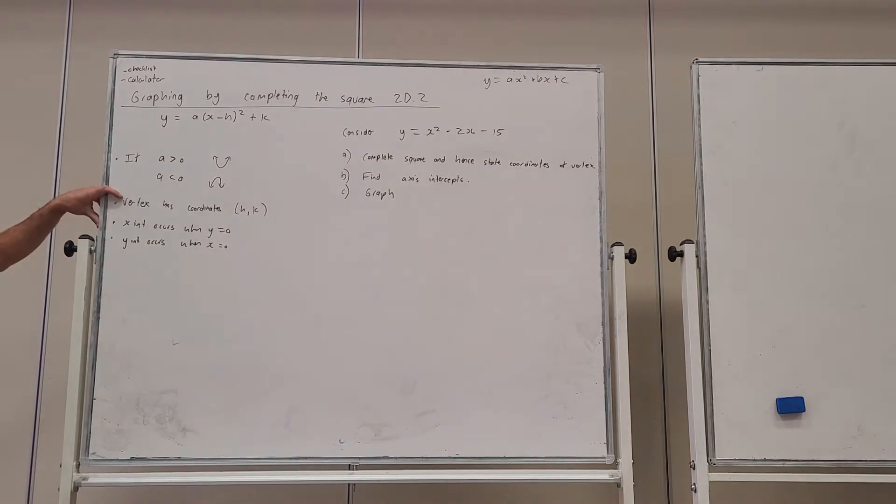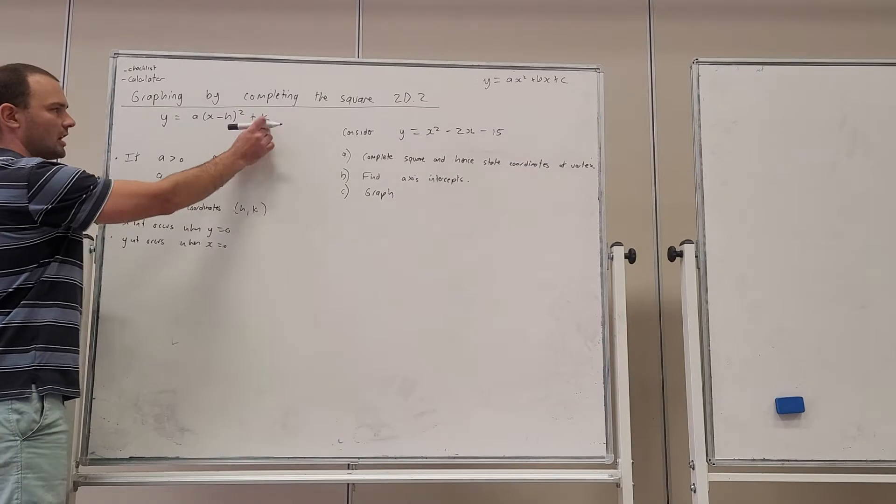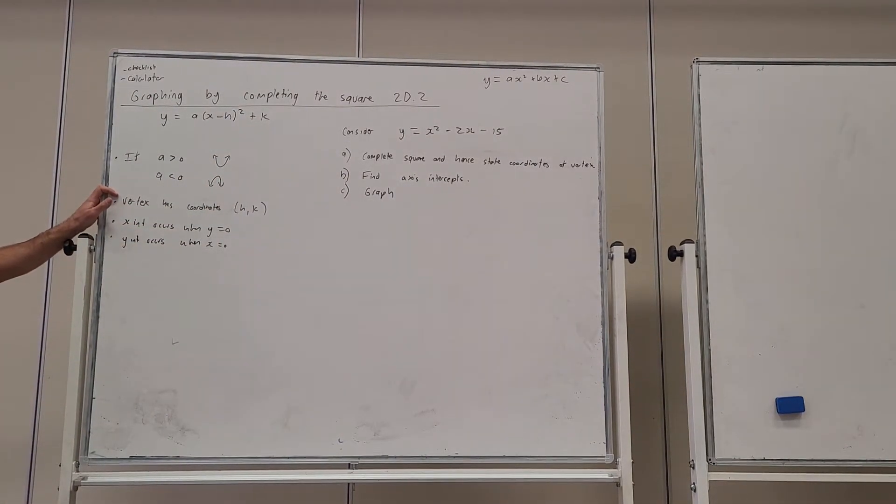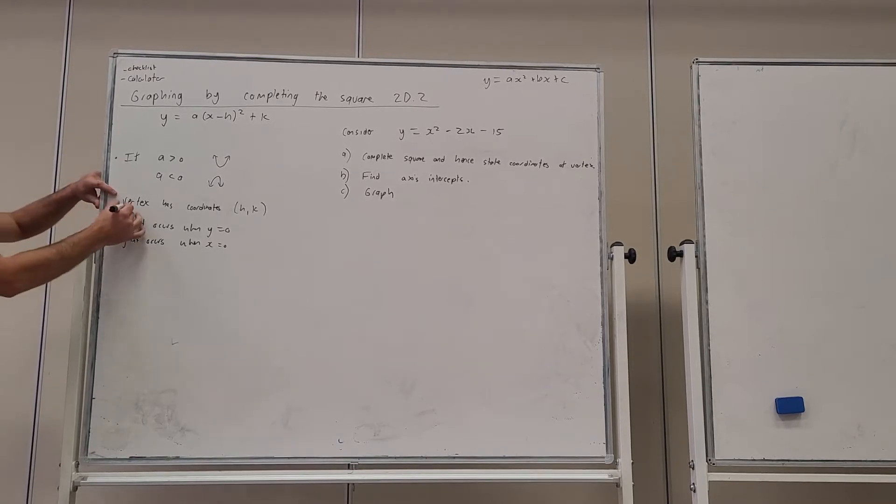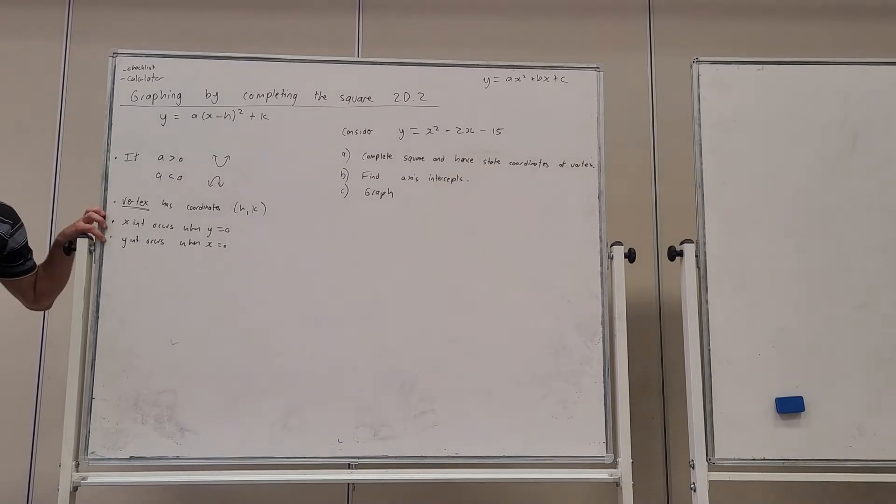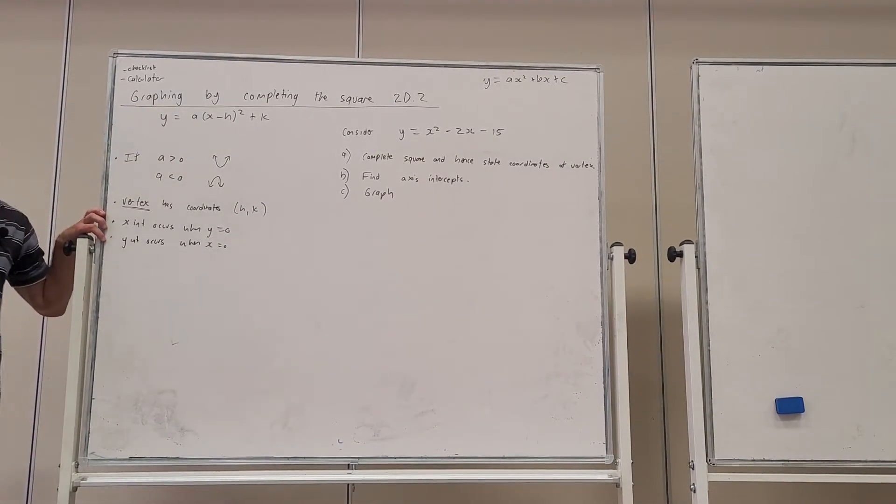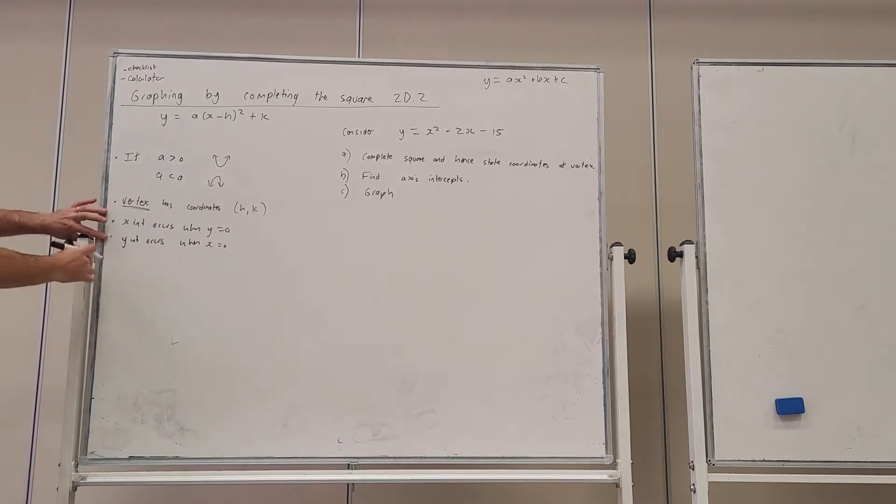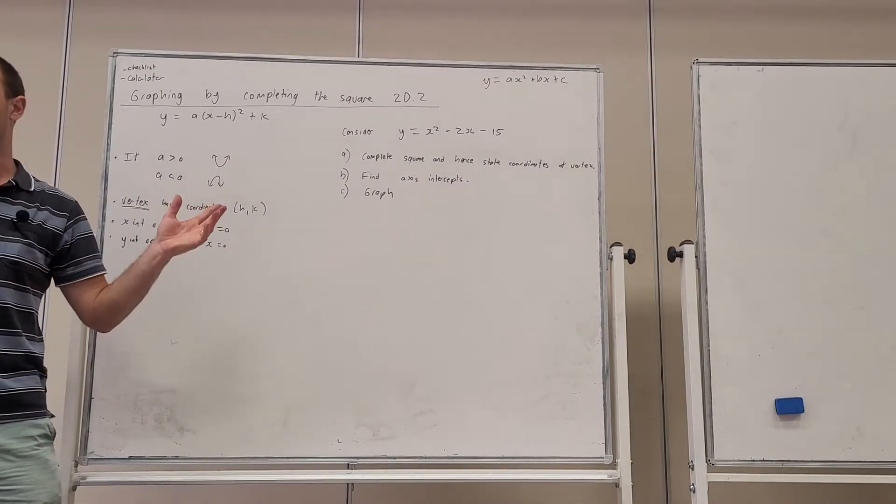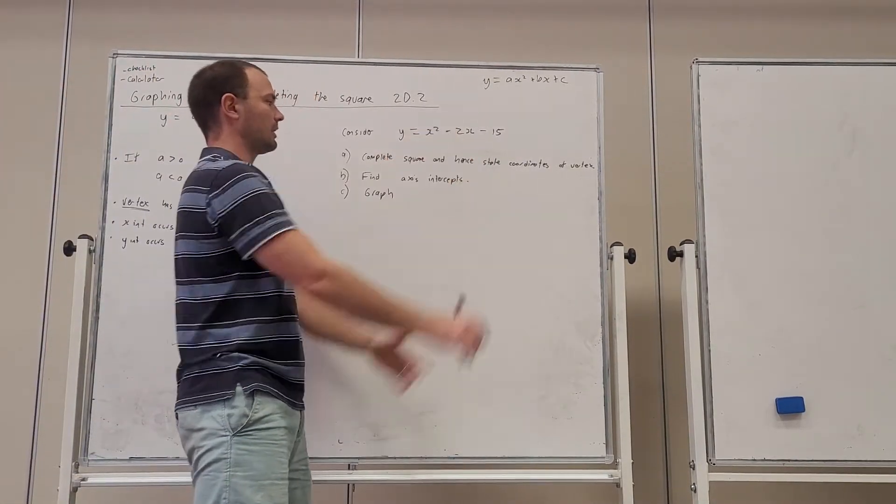The vertex, and I'll put the vertex on a graph in a moment to show you so you can remember what that is, has coordinates h, k. So whatever the value of h is and the value of k is, there are your x and y coordinates of the vertex. We also call that turning point. And then obviously, as with any function, the x-intercept occurs when y is zero, and the y-intercept occurs when x is zero. That's the case with any function.